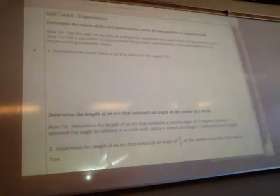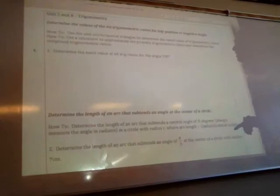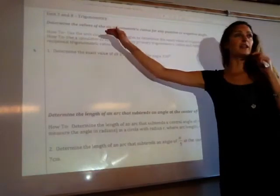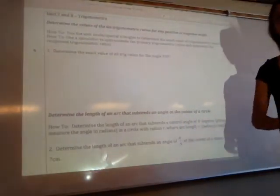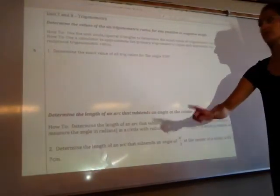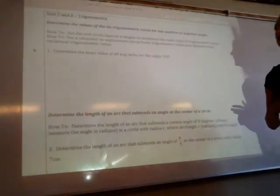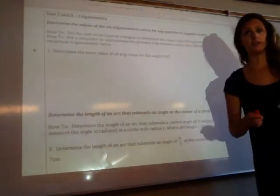First type of question you might see is to determine the values of 6 trigonometric ratios for any positive or negative angle. So, one thing that's really important, at the beginning of your test I would recommend drawing out the 3 special triangles or that unit circle. That's going to help you find the exact value of trig ratios and that's going to be useful for a variety of questions.